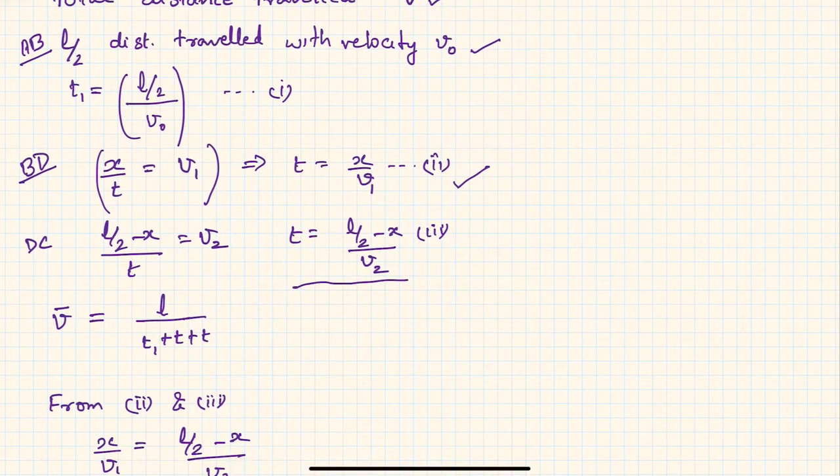You can equate 2 and 3, but before that, what is the mean velocity? Mean velocity is given by, since it is a straight line motion, mean speed equals mean velocity. So l is t1 plus t plus t. Total distance was l and total time taken was t1 then t plus t.